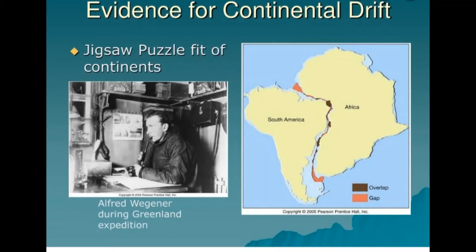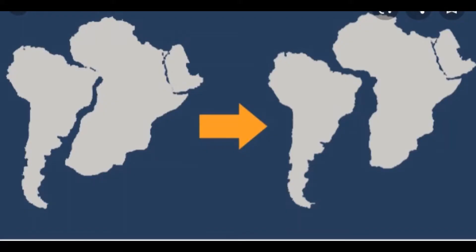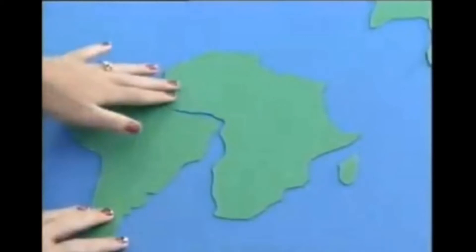Alfred Wegener came up with a number of evidence to support his claim that the Earth was once a supercontinent he called Pangea. One such evidence is the jigsaw effect. When you observe the map of the world a little closer, you will notice that some of the continents appear as if they had been joined at some point. An example of this is the coastline of South America and Africa. When you adjust them together, they will fit nicely together like pieces of a jigsaw puzzle.